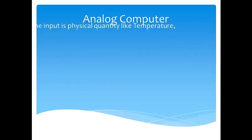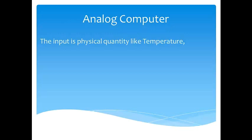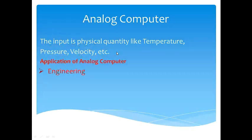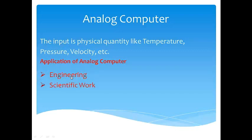Now we will see what is analog computer. The input given to an analog computer is a physical quantity like temperature, pressure, velocity, etc. The analog computer works with physical quantities — how much temperature, how much pressure, etc. Analog computers are used in engineering purposes, scientific works, controlled processes, and chemical industries.